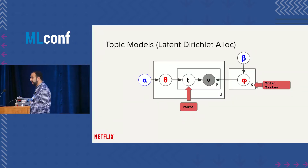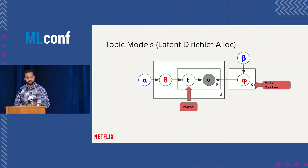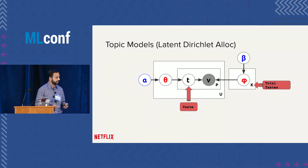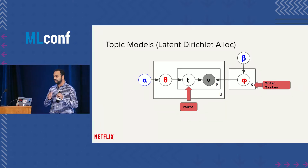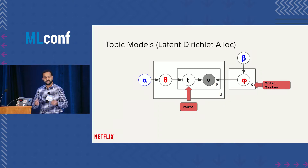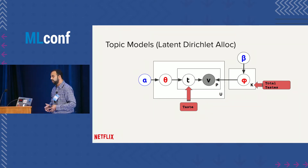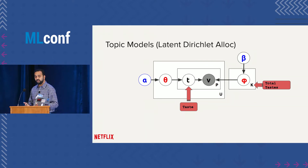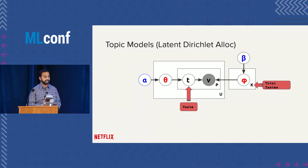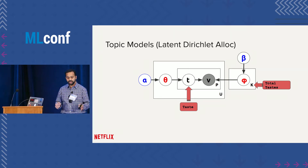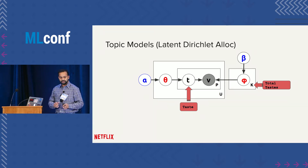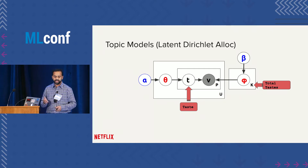A couple of years back, in order to build these collaborative filtering models, we started investigating topic models. These are extremely powerful generative models with a certain generative story behind how the data is obtained. The data we're talking about includes the videos our members have watched, the time of day, the day of the week, the device, the language, the country, and so on. We want to build a collaborative filtering model to explain these observations.